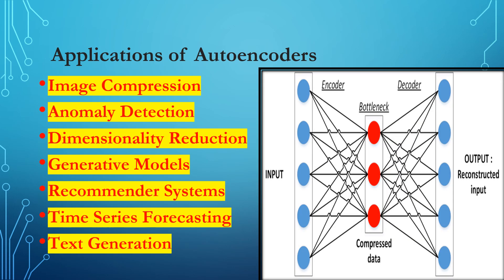Autoencoders have a wide range of applications due to their ability to identify essential features and their effectiveness in compressing and reconstructing data. First, image compression: autoencoders learn a compact representation of image data, and the encoded representation can reconstruct the original image with a smaller file size without significant loss of quality. Second, anomaly detection: by training an autoencoder on normal data, anomalous inputs will be difficult to reconstruct, indicating the presence of an anomaly — useful for detecting fraud, cybersecurity threats, and other unusual events.